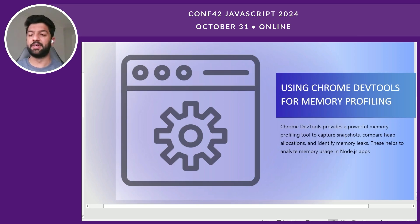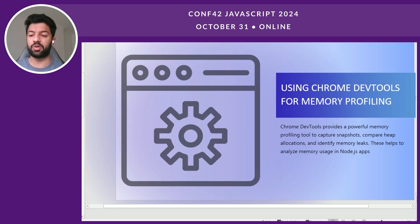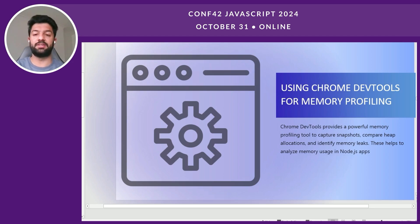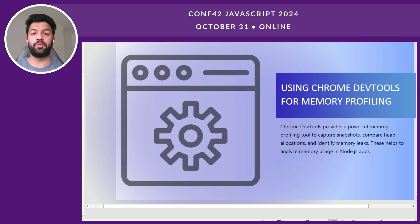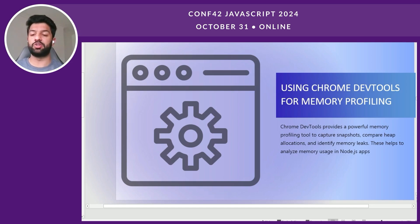There are tools we can use to identify these leaks. First, Chrome DevTools is a powerful memory profiling tool used to capture snapshots, compare allocations, and identify memory leaks. Snapshots are time-frames where we can check the state of the app at any specific point — for example, before and after executing a function — allowing us to compare memory usage before and after execution of certain functions or objects.